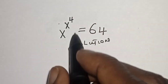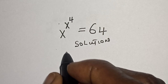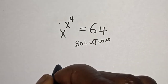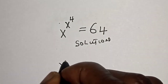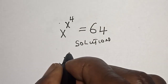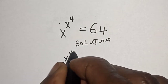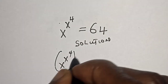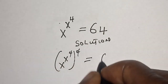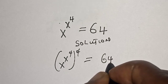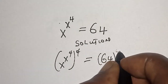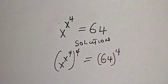Let's multiply the power of both sides by 4. That is, s raised to power s raised to power 4, all raised to power 4, is equal to 64 raised to power 4.